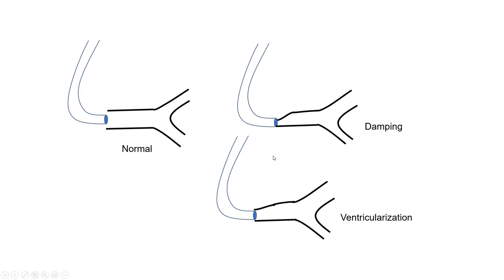If you inject while occluding the vessel with damping or ventricularization, contrast will hang and not clear from the coronary, further aggravating the ischemia already created by the catheter. The catheter already creates ischemia and the patient may have chest pain. If you give contrast, you dramatically aggravate ischemia by removing red blood cells and creating contrast stain in the coronary, which causes further ischemia and ventricular fibrillation. The first thing you see when injecting is contrast hanging in the coronary. Next, myocardial stain — contrast staining the actual myocardium. Whenever you see myocardial stain, you are about one second or less away from V-fib.